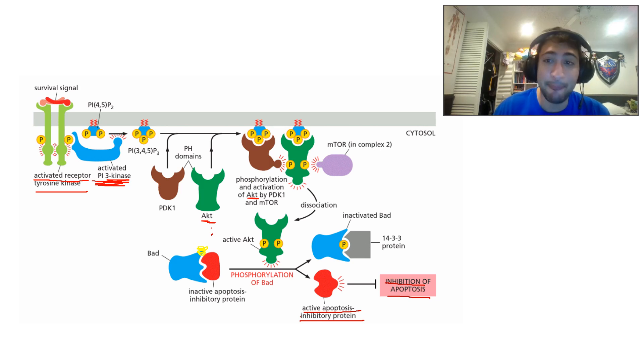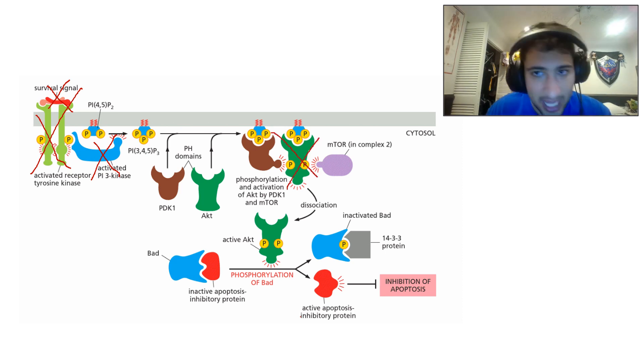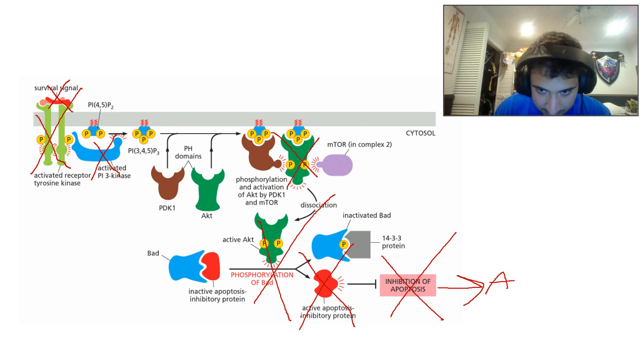So in the absence of survival signal, so let's work through the pathway. In the absence of a survival signal, you do not get receptor tyrosine kinase activation. Because you don't have receptor tyrosine kinase activation, you don't have PI3 kinase activation. Because you don't have PI3 kinase activation, you do not have AKT phosphorylation. Because you don't have AKT phosphorylation, you don't have phosphorylation of BAD. Because you don't have a phosphorylation of BAD, you do not have inhibition of apoptosis. Because you do not have inhibition of apoptosis, what do you get? Apoptosis.